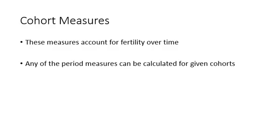We should note that all these period measures that we've looked at could be converted to cohort measures. The difference is that instead of looking at separate groups, we're looking at the same group through time. That's the difference between a cohort and a period measure.